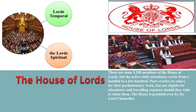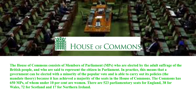The House of Commons consists of members of Parliament, MPs, who are elected by the adult suffrage of the British people and who are set to represent the citizens in Parliament. In practice, this means that the government can be elected with a minority of the popular vote and is able to carry out its policies because it has achieved the majority of seats in the House of Commons. The Commons has 650 MPs, of whom under 10% are women. There are 523 parliamentary seats for England, 38 for Wales, 72 for Scotland, and 17 for Northern Ireland. The Speaker presides over meetings of the House of Commons.